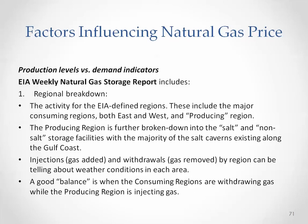The EIA Weekly Natural Gas Storage Report includes information on natural gas storage. The first piece of information is a regional breakdown — the activity for EIA-defined regions, which includes the major consuming regions both east and west, and producing regions. The producing region is further broken down into salt and non-salt storage facilities, with the majority of salt caverns existing along the Gulf Coast. Injections or gas added, and withdrawals or gas removed by region, can be telling about weather conditions in each area. A good balance is when consuming regions are withdrawing the same amount of gas as the producing region is injecting.